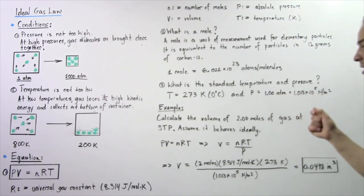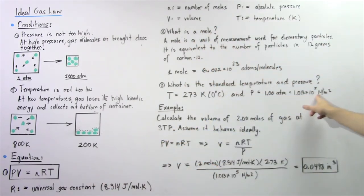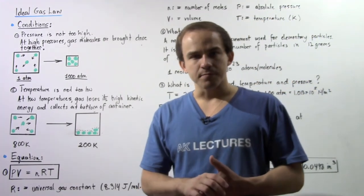But since we're using this value, we have to use newtons per meter squared. So we plug in 1.013 times 10 to the 5 newtons per meter squared. We plug in our values, multiply and divide, and we get 0.0448 meters cubed as the volume of our gaseous system.